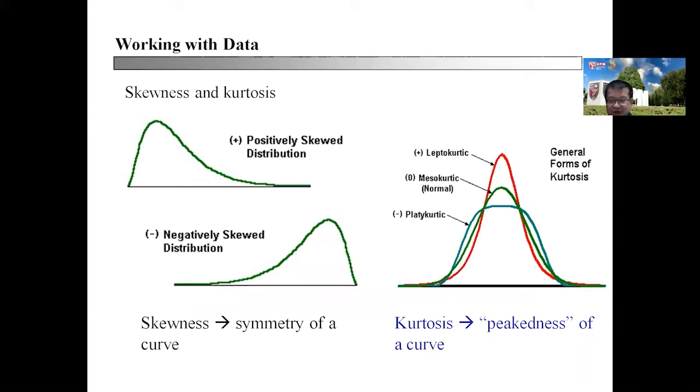You can also see kurtosis, which is the next quantity. It can be described as the peakedness of the curve itself. You have leptokurtotic, mesokurtotic, which is the normal kurtosis, and platykurtotic.